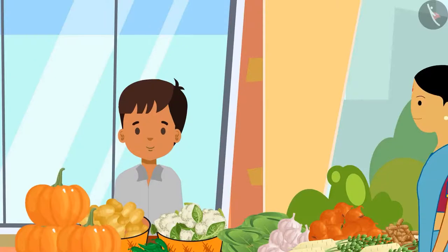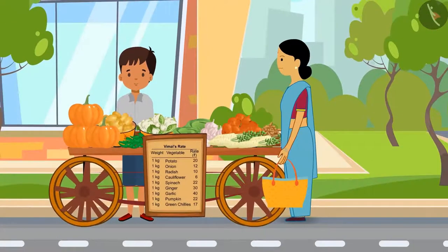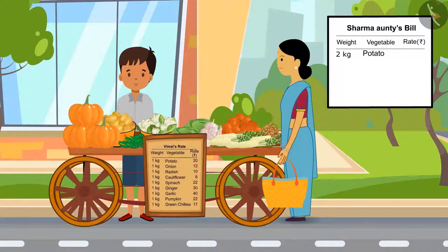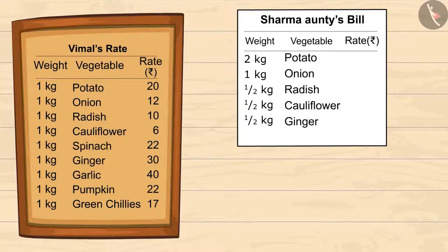This extra money is Vimal's daily earnings. Sharma auntie is buying some vegetables from him. She bought 2 kgs of potatoes, 1 kg of onions, half a kg of radish, half a kg of cauliflower and half a kg of ginger. Let's together find out the total price of Sharma auntie's purchase from Vimal.